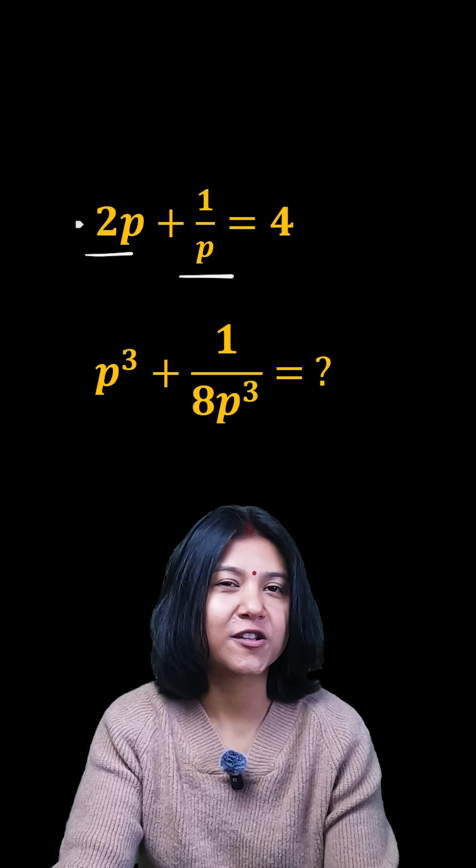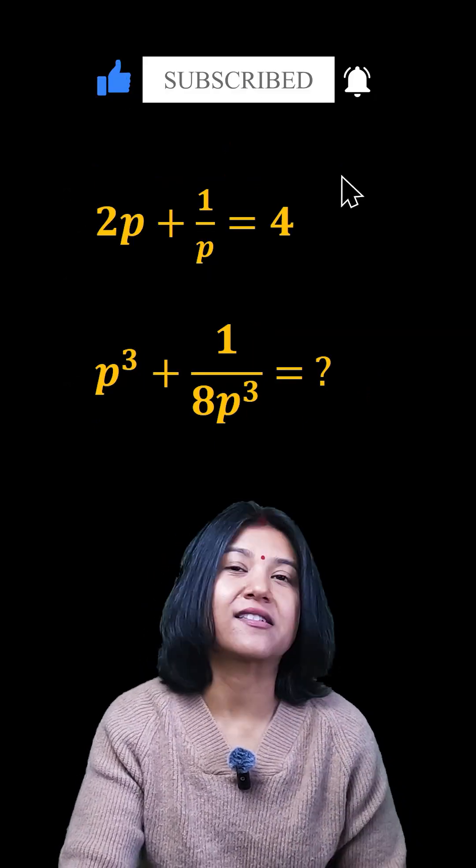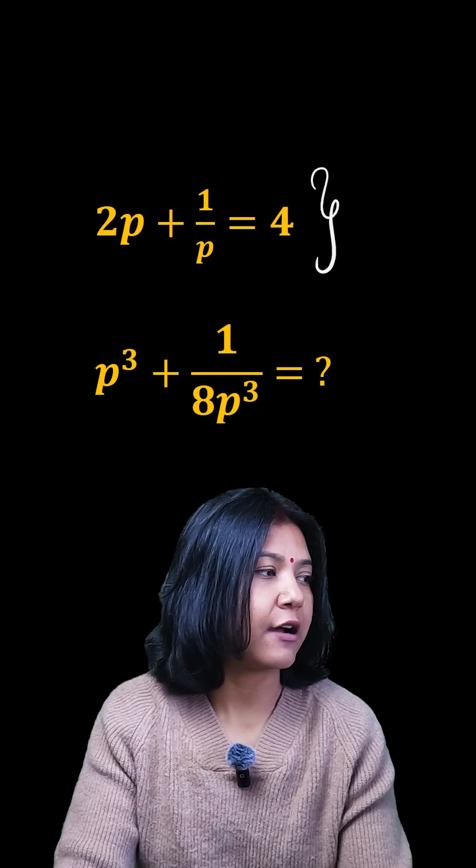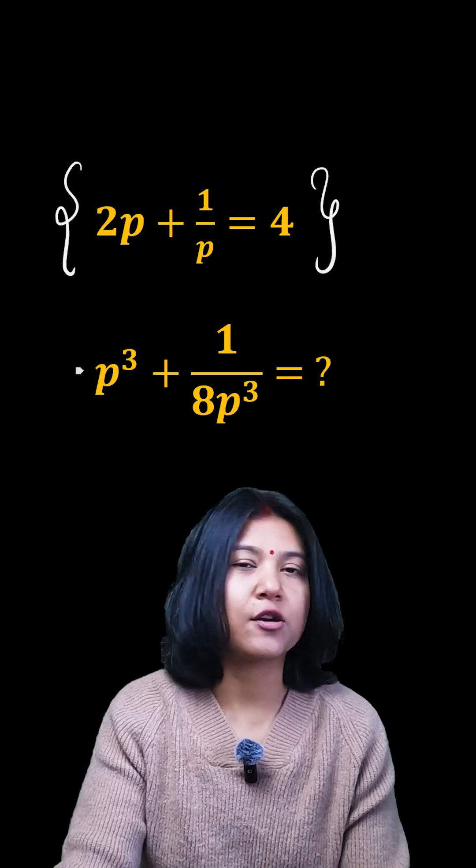So 2p whole cube is 8p³. How can I make sure I'm exactly getting these terms? I want to get the cube of p and 1/(2p).